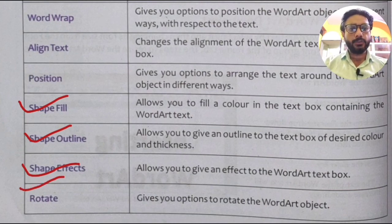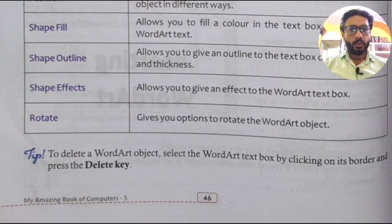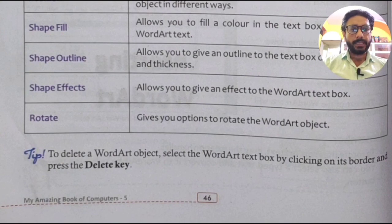Rotate gives you the option to rotate the Word Art object. To delete a Word Art object, select the Word Art text by clicking on its border and press the Delete key on the keyboard. This will remove the Word Art from the document.